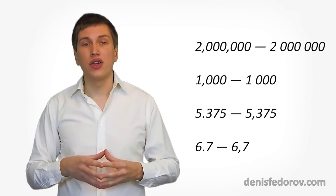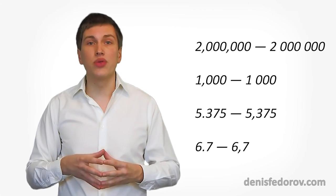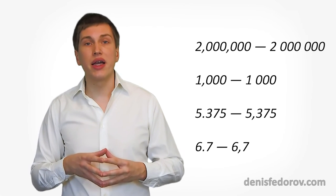Also, big numbers are written differently. In English comma is a separator for big numbers, like 2,000,000. In Russian we do not write comma as a separator, because comma is the separator for decimal numbers. So in big numbers as a separator we use a space.